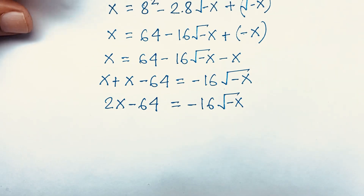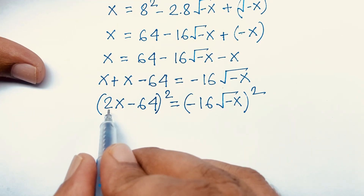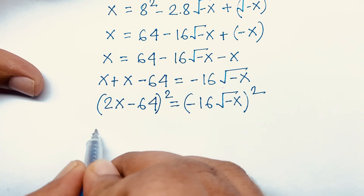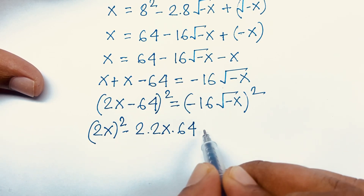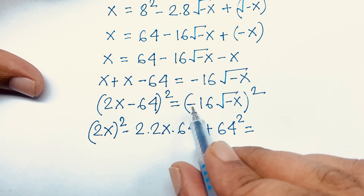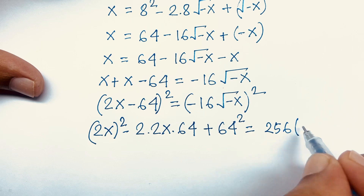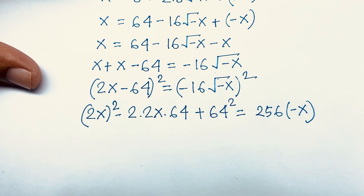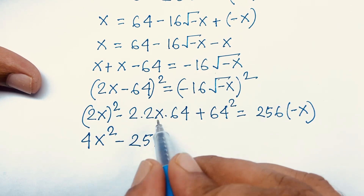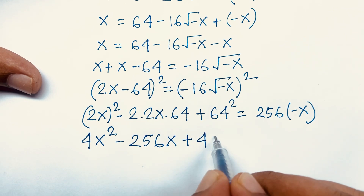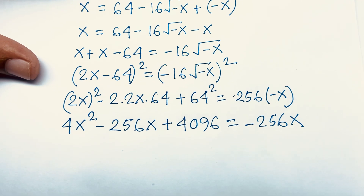We square both sides again. On the left, we expand (2x - 64)² using (a - b)² = a² - 2ab + b², giving 4x² - 2·(2x)·64 + 64² = 4x² - 256x + 4096. On the right, (-16)² · (-x) = 256·(-x) = -256x. The -256x terms cancel from both sides.